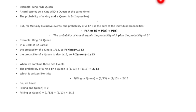Another example: a card cannot be a king and a queen at the same time. Either a card can be a king or it can be a queen, but not both simultaneously. So the probability of king AND queen is zero. For mutually exclusive events, the total probability P(A or B) equals P(A) plus P(B).